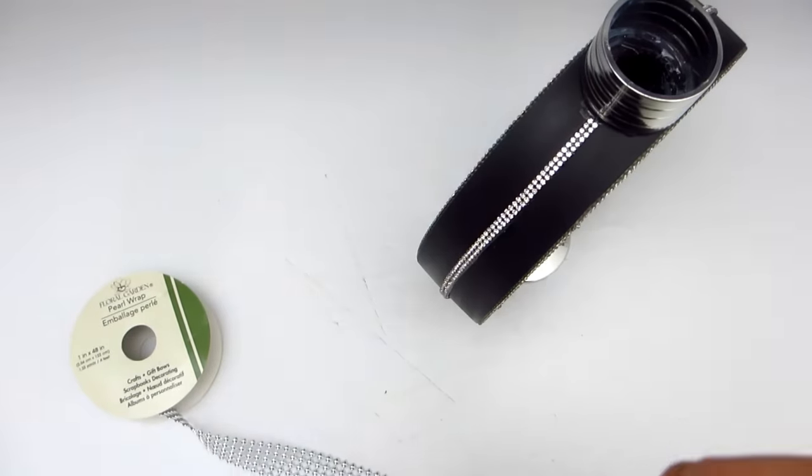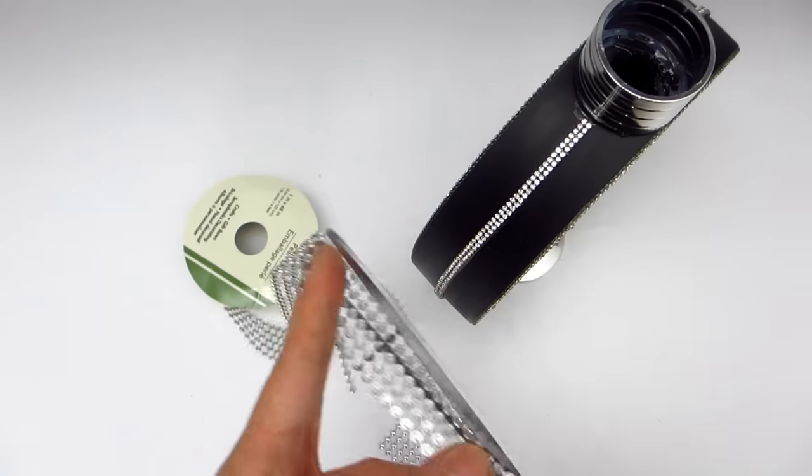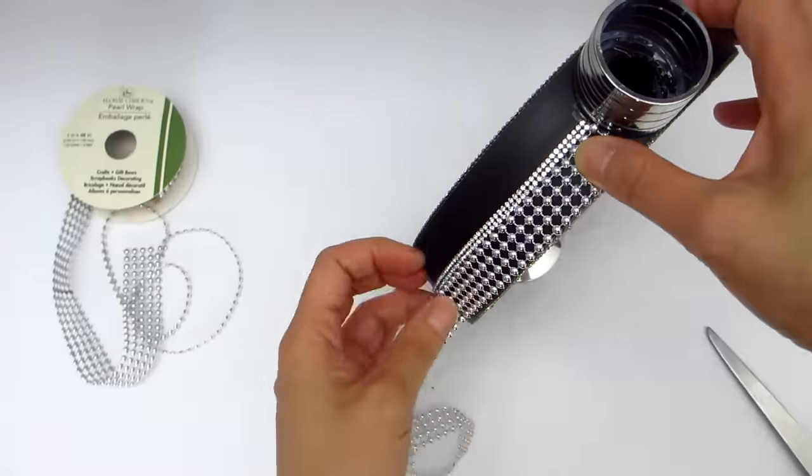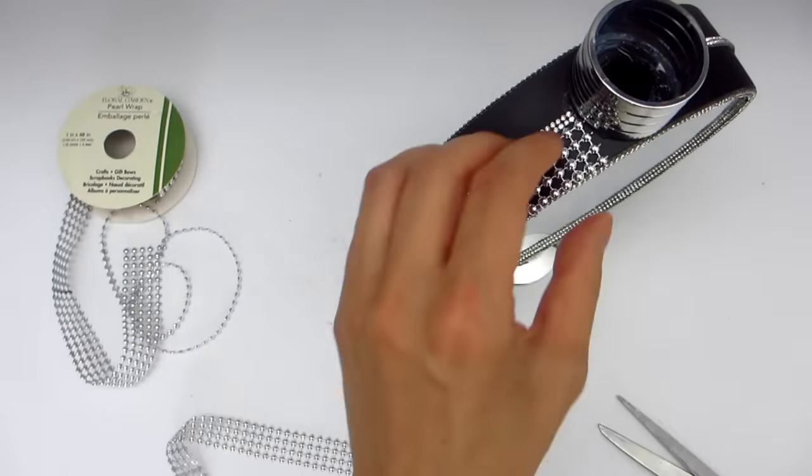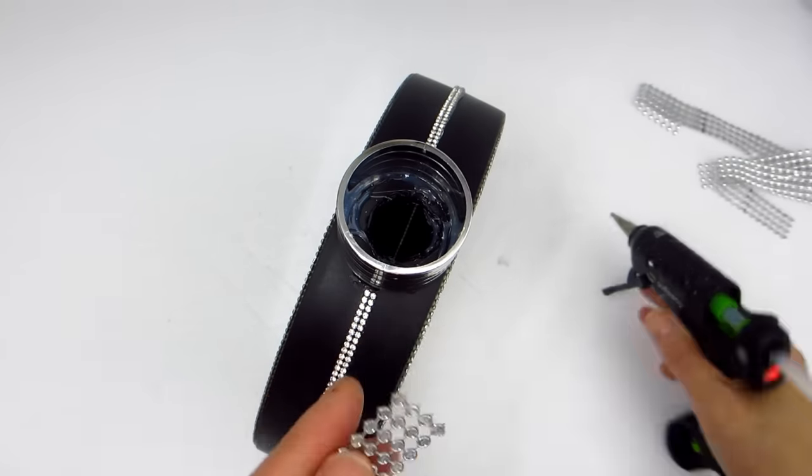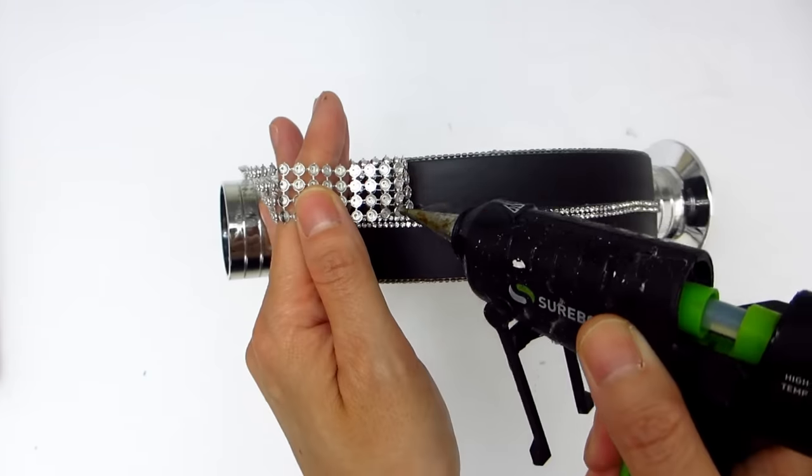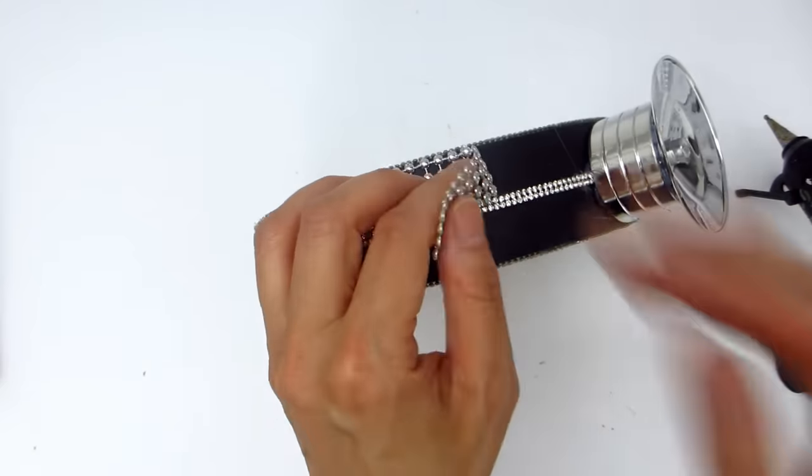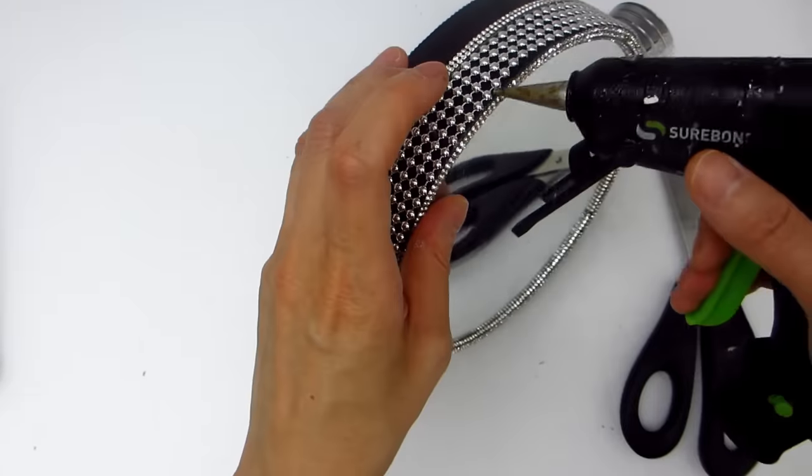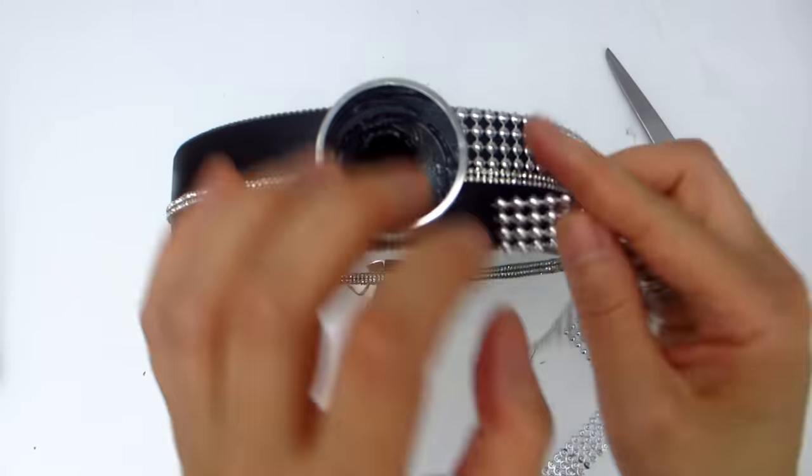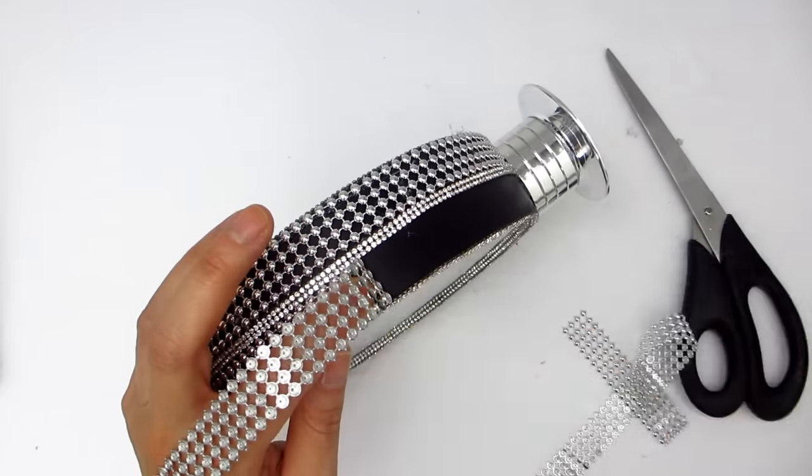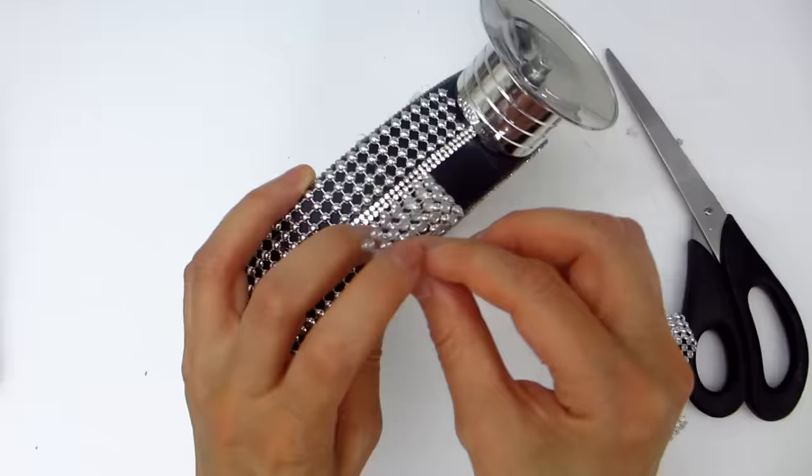For a more complete look, I'm taking the same silver beaded mesh and covering the rest of the black frame of the mirrors.